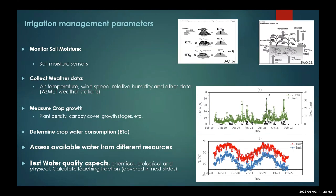We also need crop data — which crop it is, the root depth at each stage, canopy cover measurements — to determine how much water is needed. We use all this data to calculate crop evapotranspiration, which can be done through models. There are lots of models using phone applications where you can input all this information and get an estimate of when you need to irrigate. We also need to consider different water resources — water from the Colorado River differs from pumped well water, which may have higher salinity, and we must factor that in when determining how much water is needed per irrigation event.